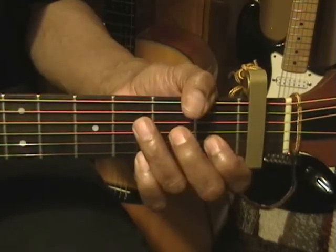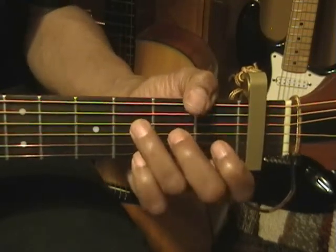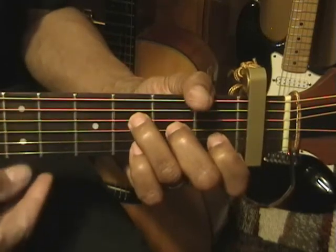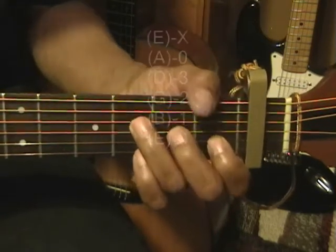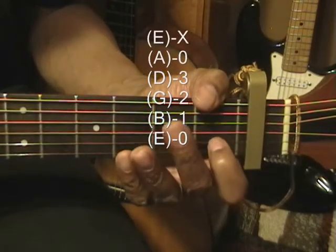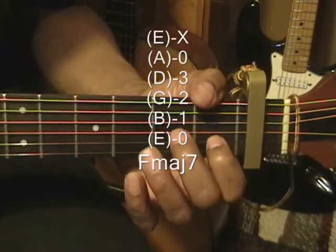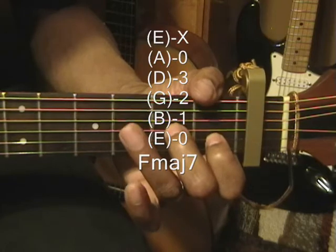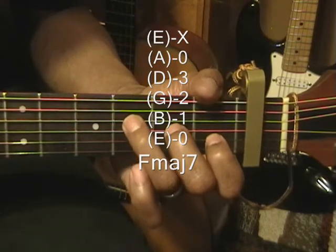F major 7 is formed this way. We have our first finger on the first fret, B string, middle finger on the G string, second fret, and the ring finger on the D string, third fret.